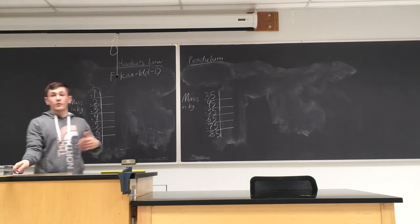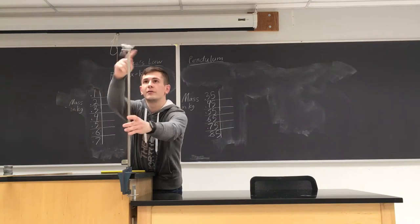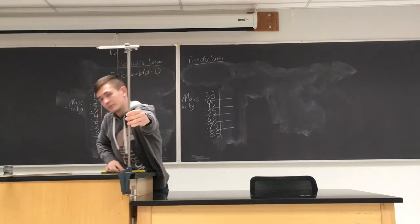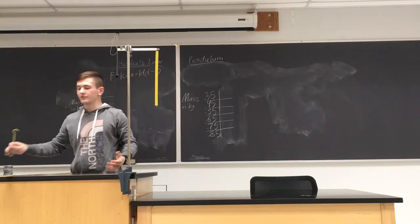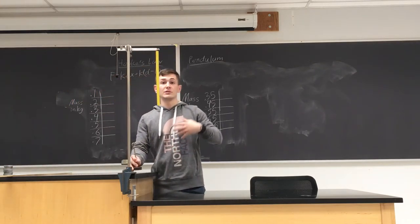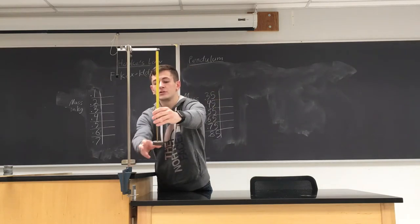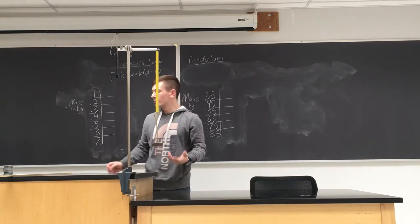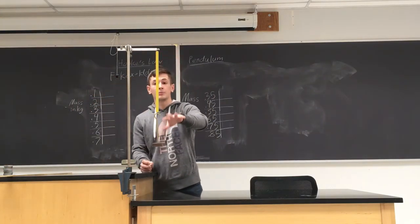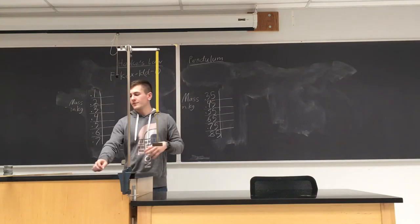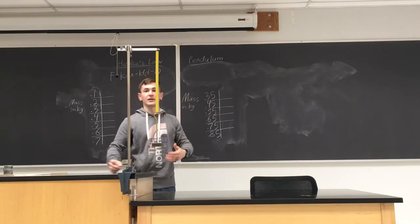For our setup we're going to start by hanging a spring from this rod up here. Once we hang the spring, what we actually need to do first is set it to zero length. We need to preload it so that we get a little bit better data, and once we pre-stretch the spring we measure the length, and that's going to be the equilibrium length L.